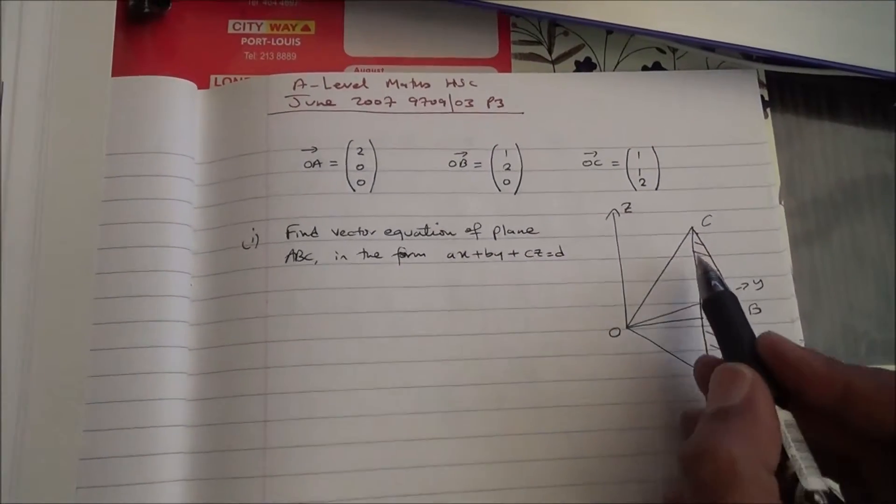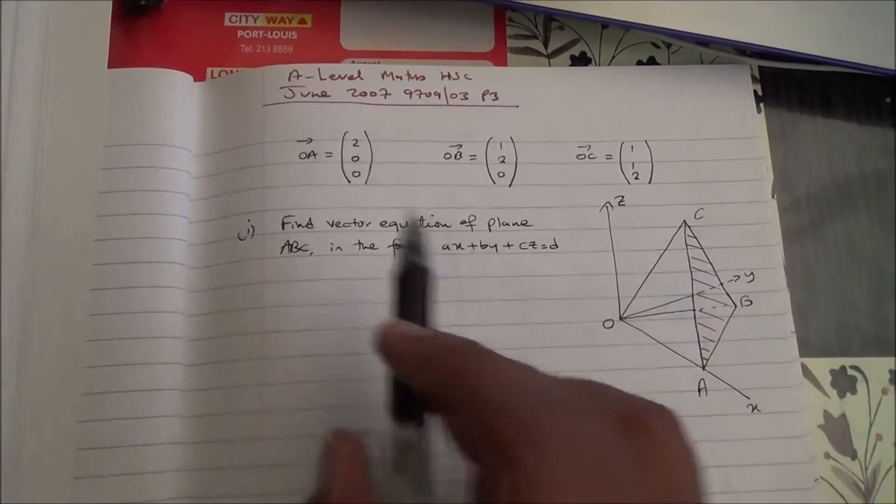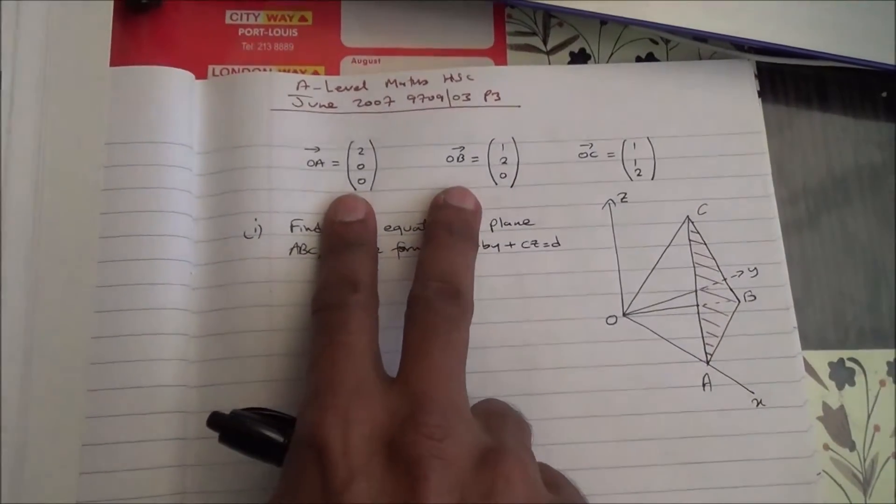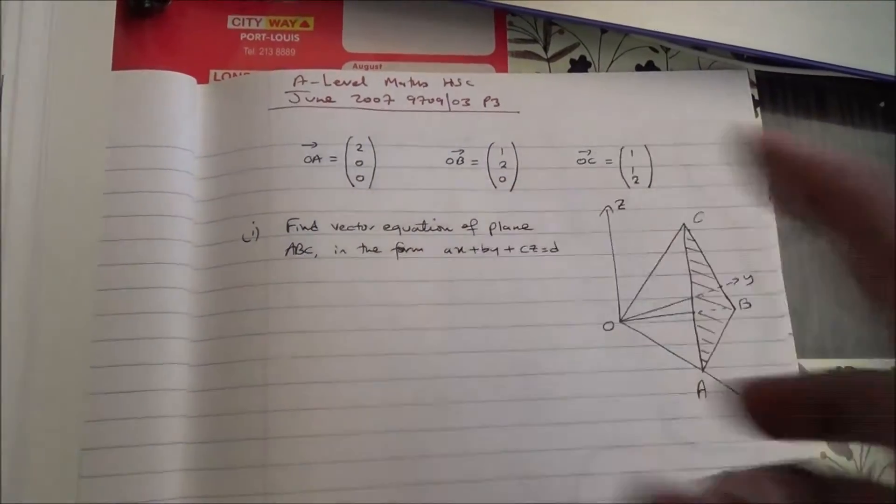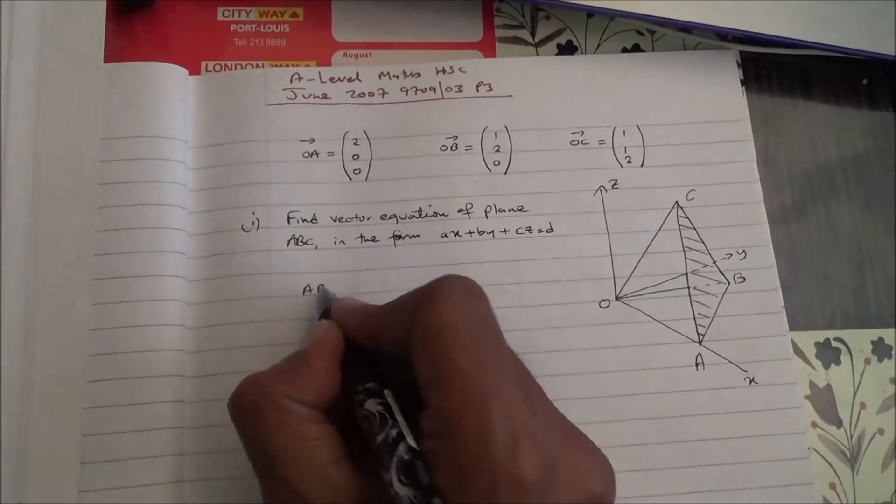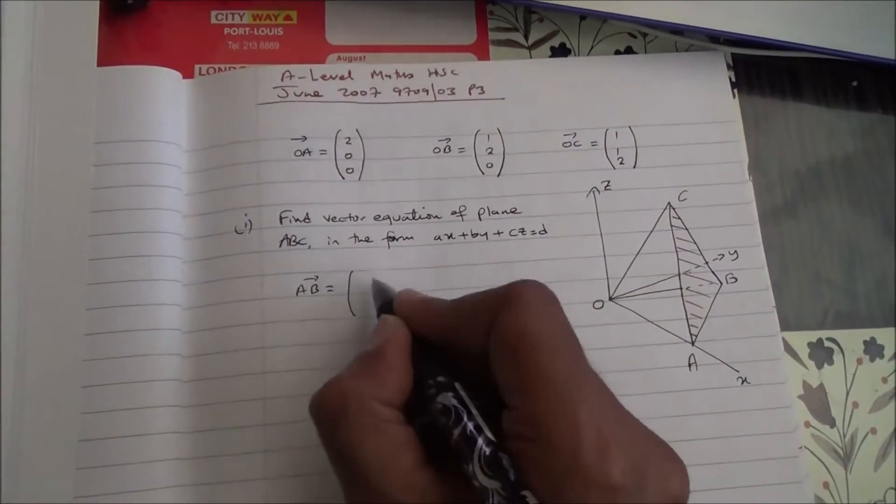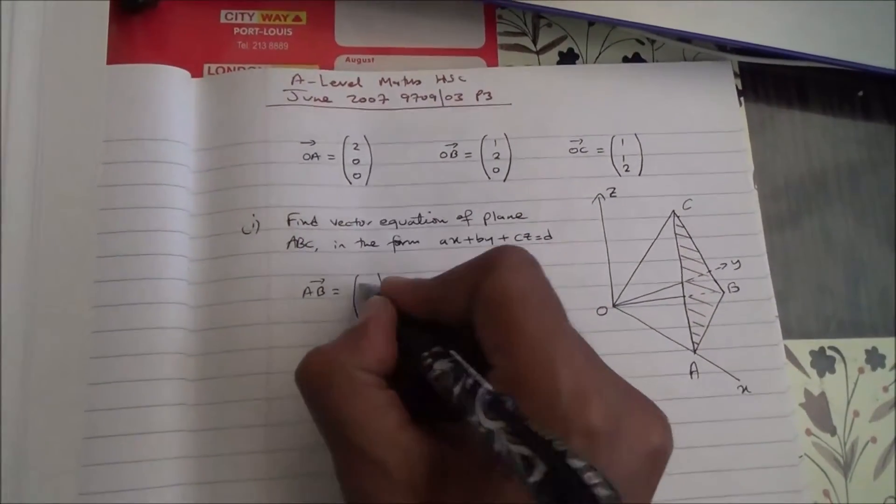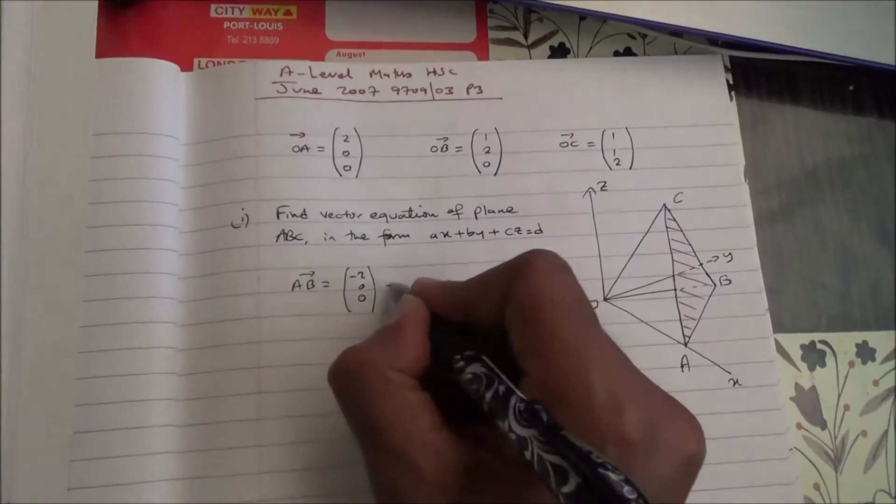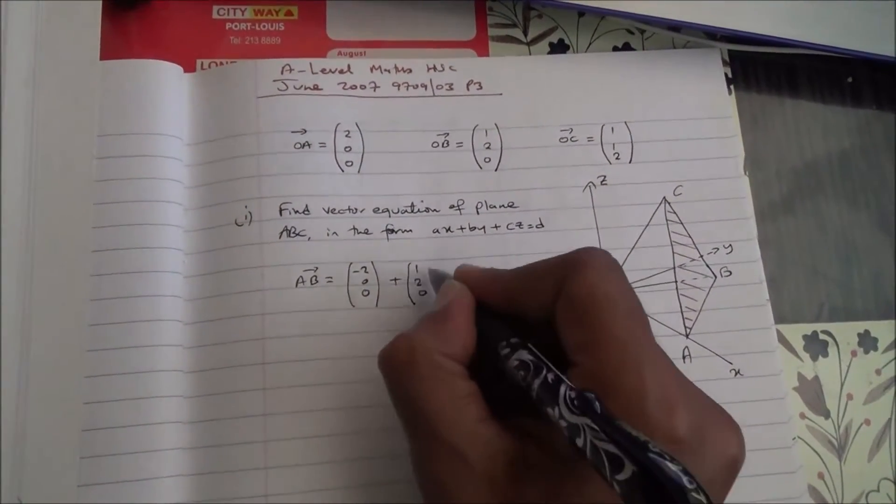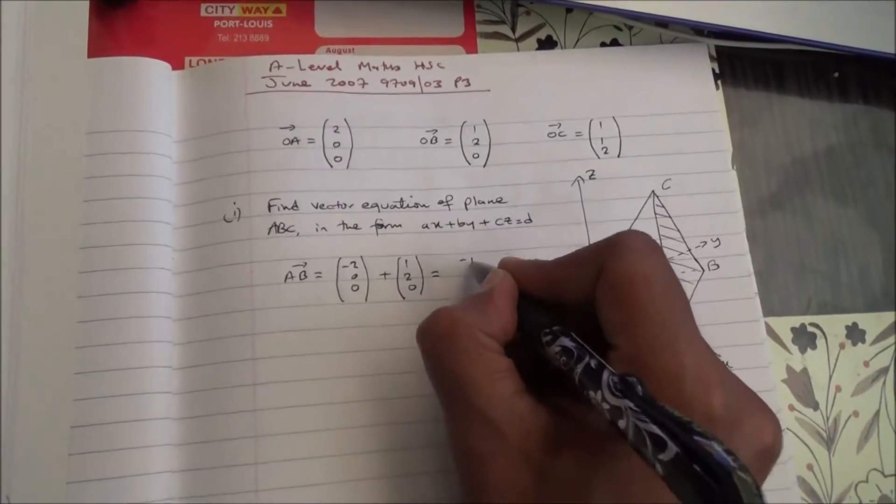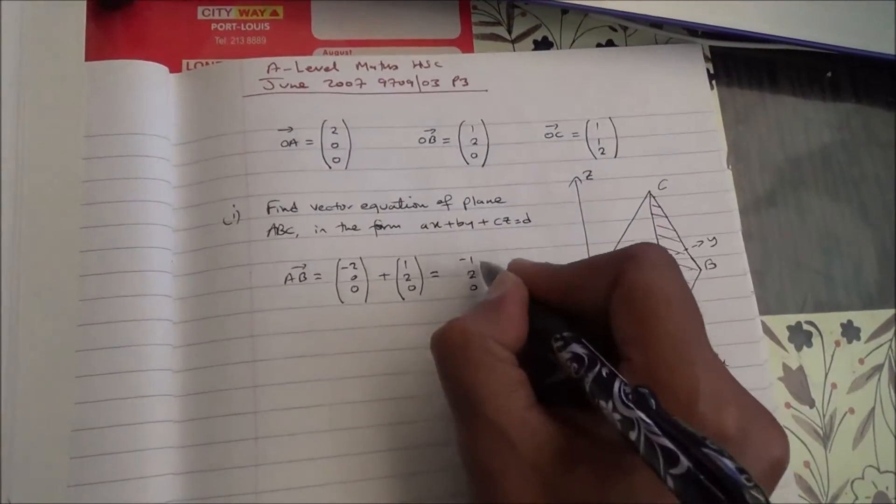So in order to be able to find the equation of the plane like this, we're going to find vector AB and then vector BC. So what is vector AB? Basically, vector AB is equal to vector AO, which is then minus 2, 0, 0, plus OB, 1, 2, 0. And that's going to give us minus 1, 2, 0.